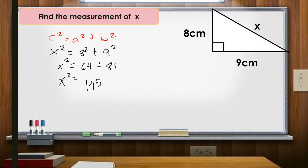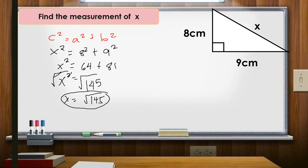So we have x². After adding, we must extract the square root. x = √145. Since 145 cannot be simplified further, the answer is x = √145 centimeters.